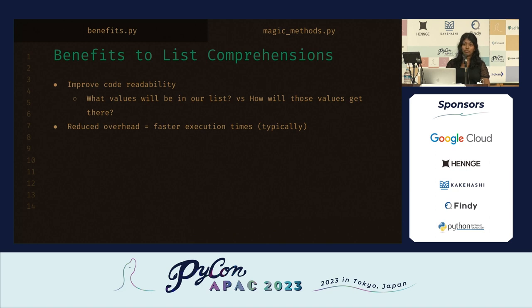In terms of the benefits to a list comprehension: first, it improves your code's readability. When we use a list comprehension, we can focus more on what values are going to be in our list versus how they're going to get there. We don't have to emphasize initializing our list and manually iterating. Instead, we can focus on what that new modified value is going to be. It also gives us reduced overhead, so the potential for faster execution time is definitely there, besides being more readable.